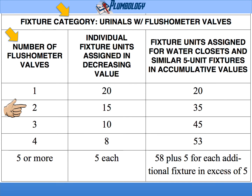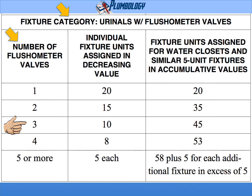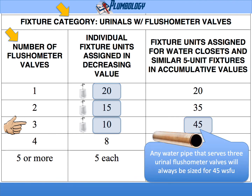If we have two urinal flushometer valves, the first one still takes the place of 20 fixture units. The second one will be 15 water supply fixture units, and the accumulative value will be 35. So any water pipe that serves two urinal flushometer valves will always be sized for 35 water supply fixture units. If we have three urinal flushometer valves, the first is 20, the second is 15, the third will be worth 10, and the accumulative value will be 45. So any water pipe serving three urinal flushometer valves will always be sized for 45 water supply fixture units.